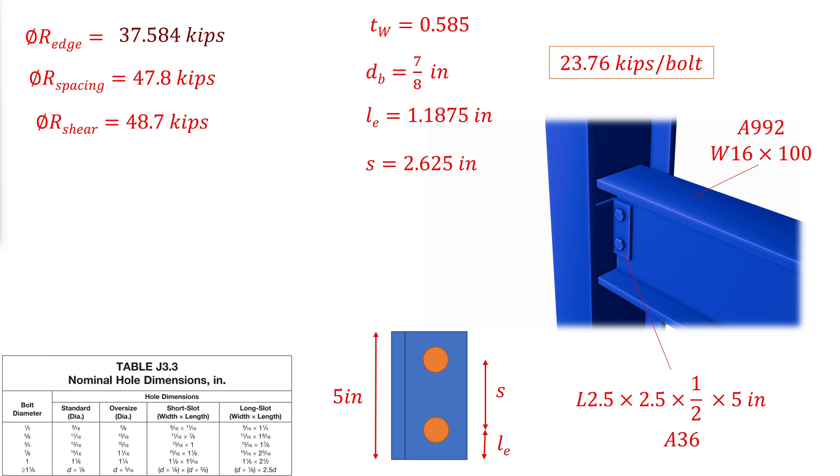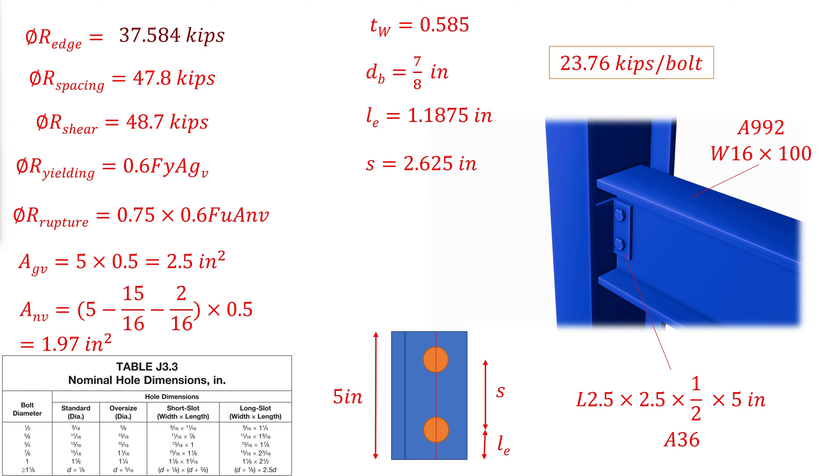However, the strength of the angle in shear still needs to be checked. The angle can fail in shear by either yield or rupture. The gross area required for yield strength is simply the thickness of the angle multiplied by its height. The net area required for rupture strength is the cross section area minus the area of the holes which are enlarged by an additional 1/16 inches in diameter each. This gives a yield strength of 54 kips and a rupture strength of 51.4 kips.